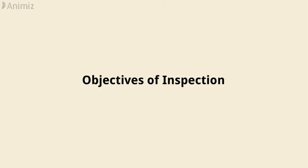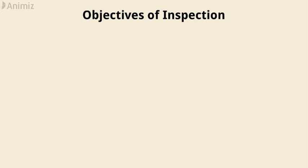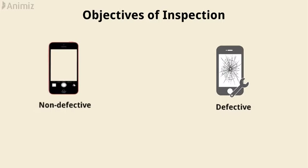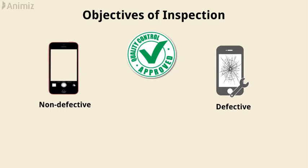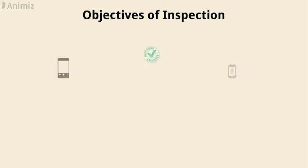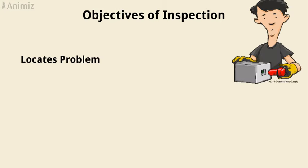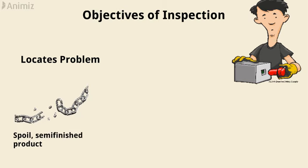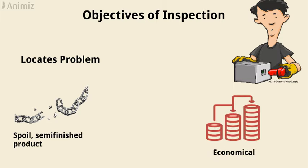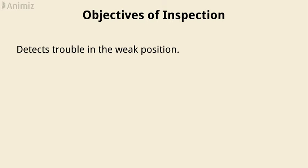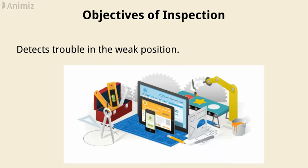What are the objectives of inspection? Inspection separates defective components from the non-defective components so that adequate quality can be maintained. Inspection locates defects in process or raw material which otherwise causes problems at the final stage. It prevents further working on spoiled semi-finished products and helps the product to be more economical. Inspection also detects weak positions and trouble by checking the design.